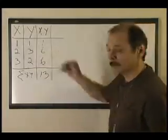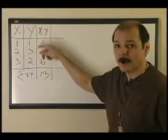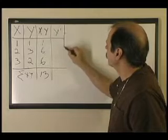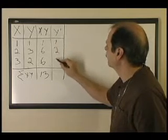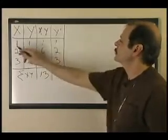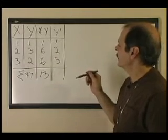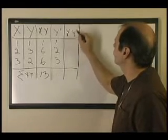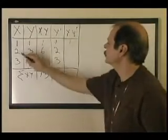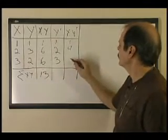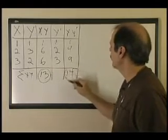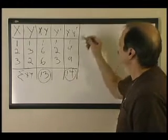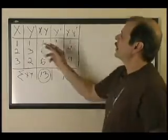Now, how would I arrange these scores to get the maximum correlation? I allow myself to move around the scores of Y. I would arrange Y so that the smallest pairs with the smallest and the highest with the highest. The sum of products would then be 1×1 = 1, 2×2 = 4, 3×3 = 9, which gives 14.